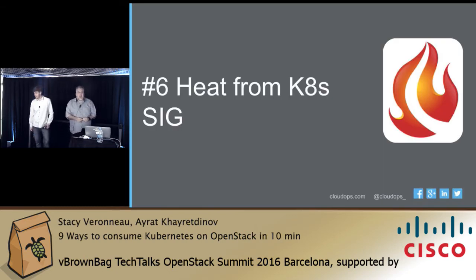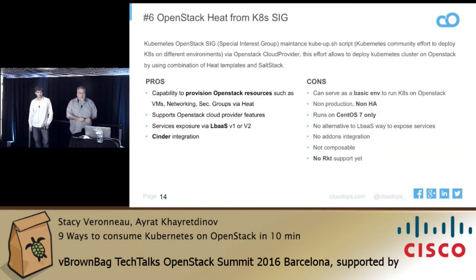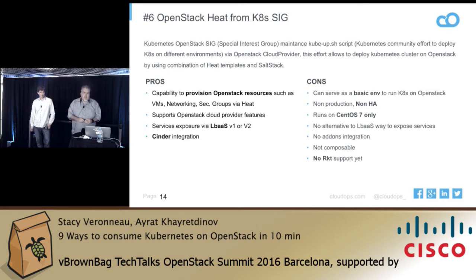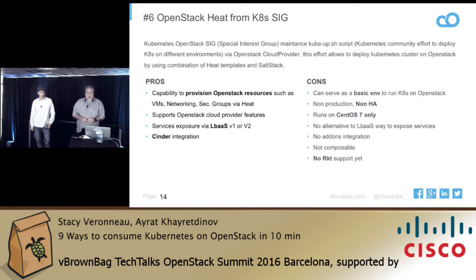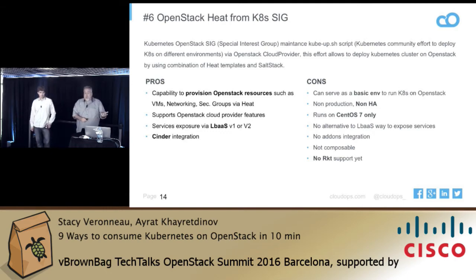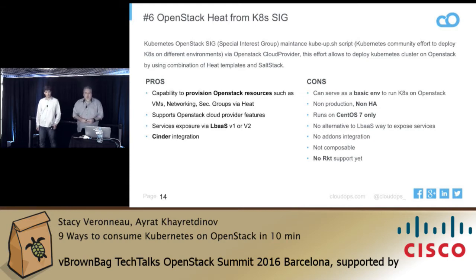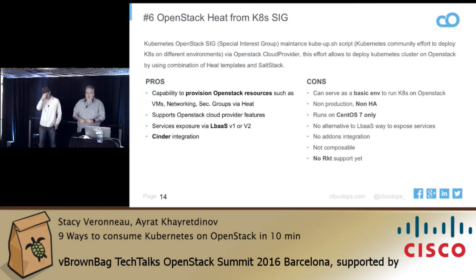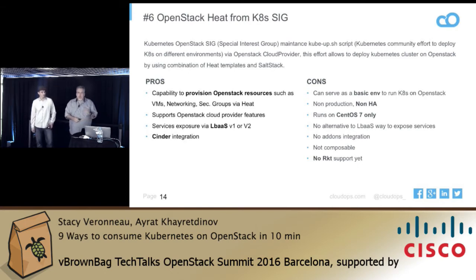Number six is using a Heat template from the Kubernetes Special Interest Group. There's a kube-up script — it gives you great integration with OpenStack resources: LBaaS v1 or v2, Cinder integration, and you can connect to the OpenStack API and consume it properly. The downside: don't use it in production to deploy your environment. It's linked to CentOS 7, there's no Rocket support, it's really a Docker thing. The alternative for LBaaS is underway, but it's a great solution if you want to consume OpenStack resources.